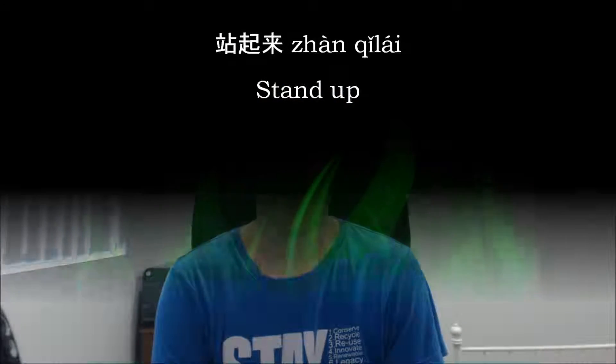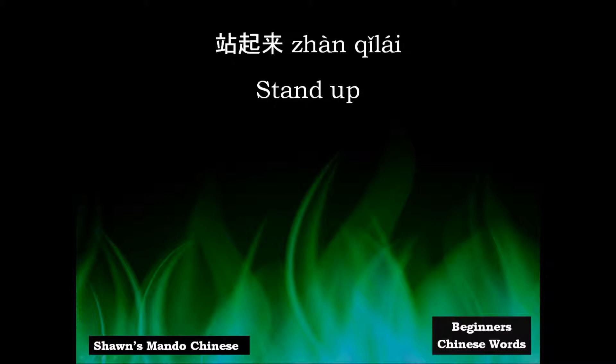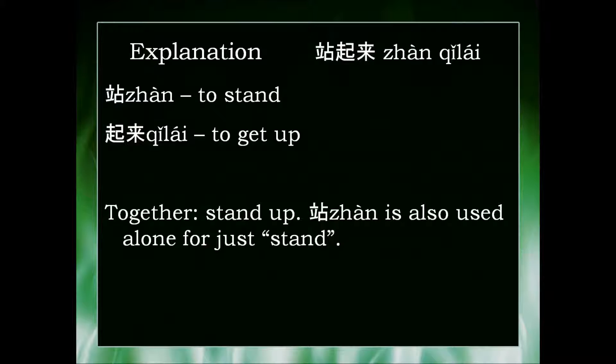Hey guys, this video is about the basic Chinese word 站起来, which means to stand up. Here's an explanation about the characters in this word. The first one, 站, is a verb which means to stand. 起来 means to get up. So together, 站起来 means to stand up. And often 站 can also be used alone just to mean stand.